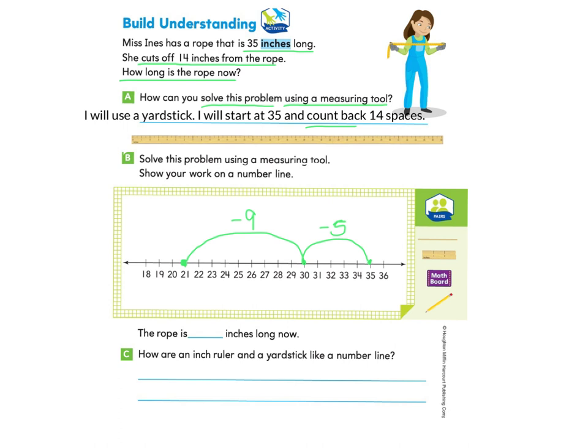Again, if I go one, two, three, four, five, six, seven, eight, nine, ten, eleven, twelve, thirteen, fourteen, I'm still going to land at the same number. It's just a different way to go backwards. So what number did I land on? What did I solve? I solved this problem and found that the rope is 21 inches long now.